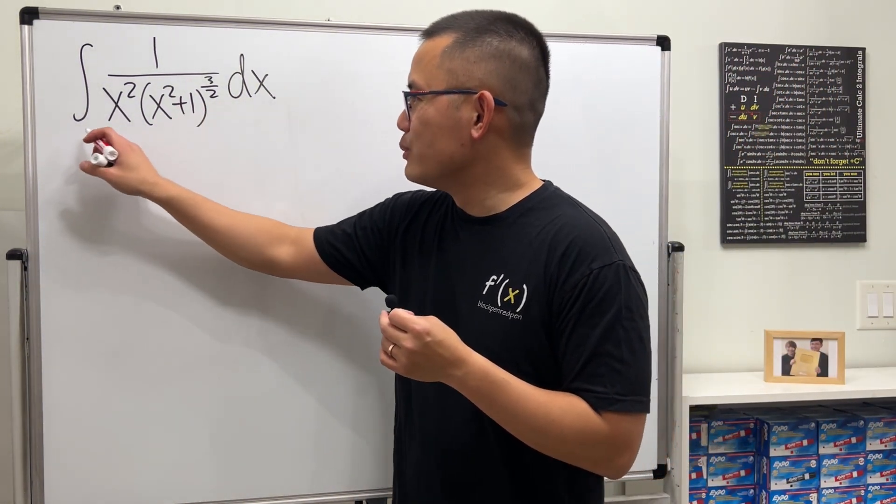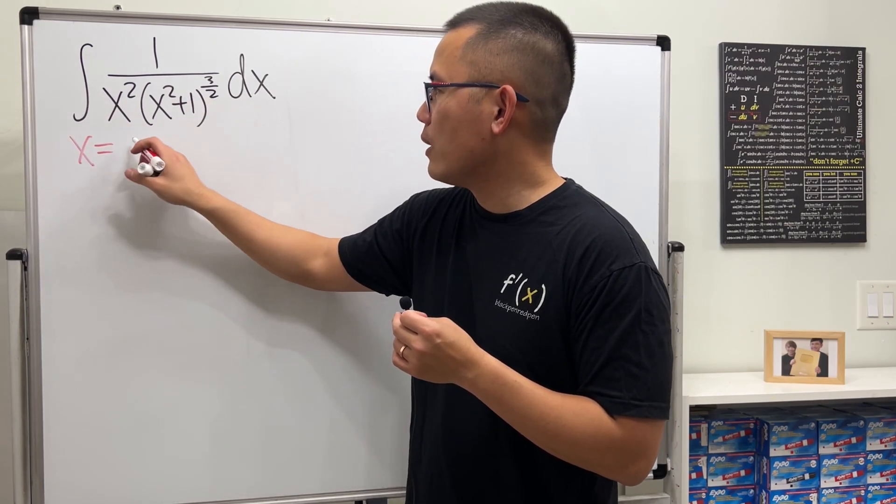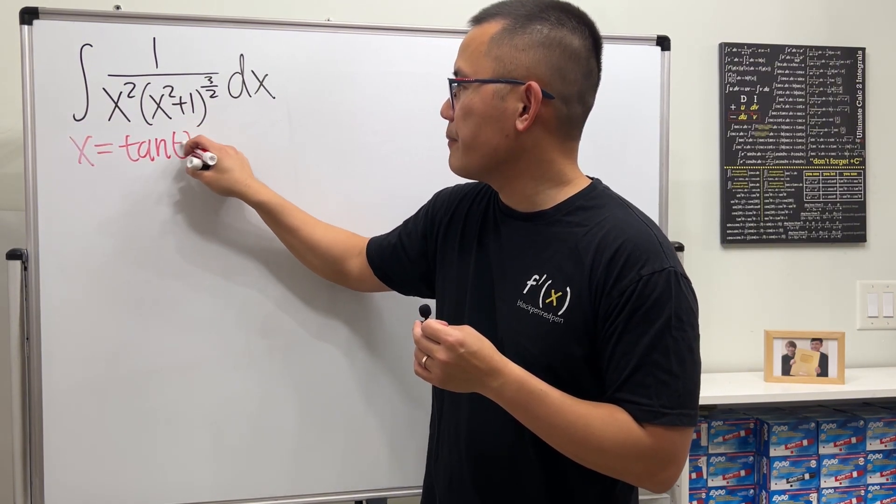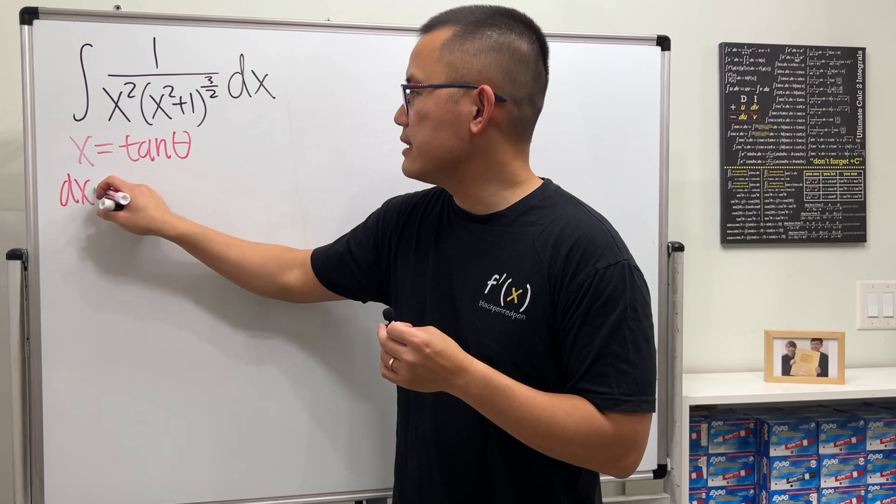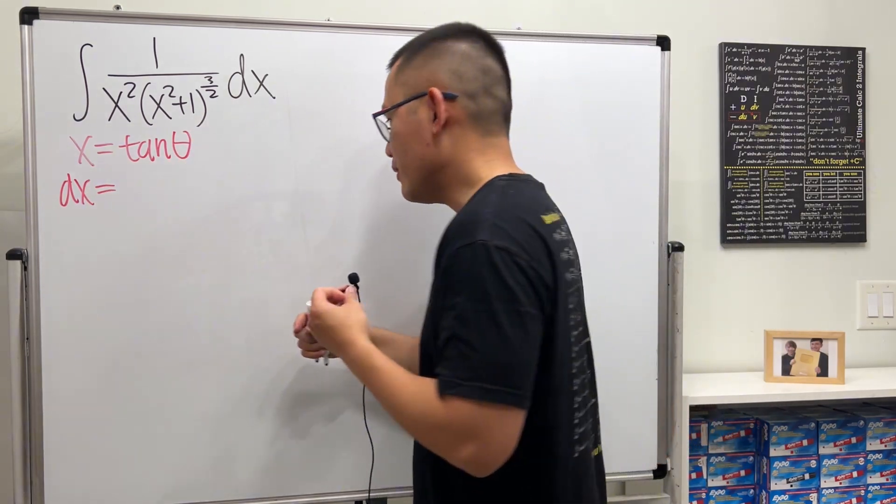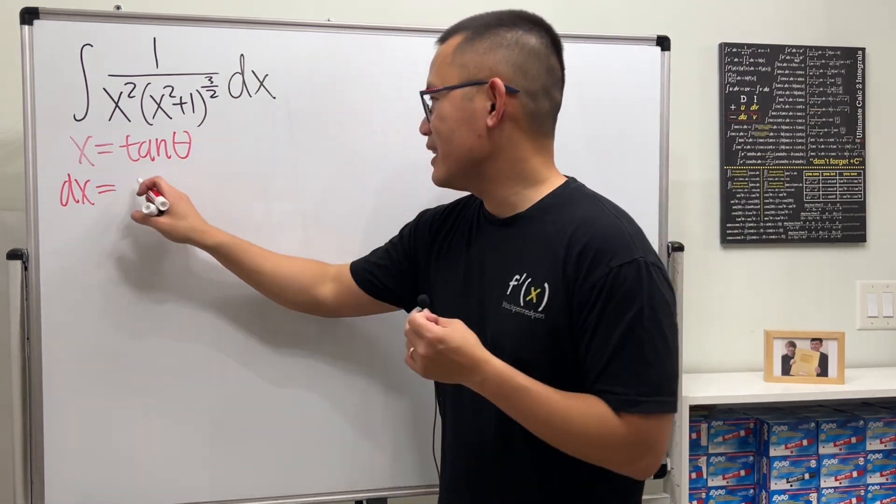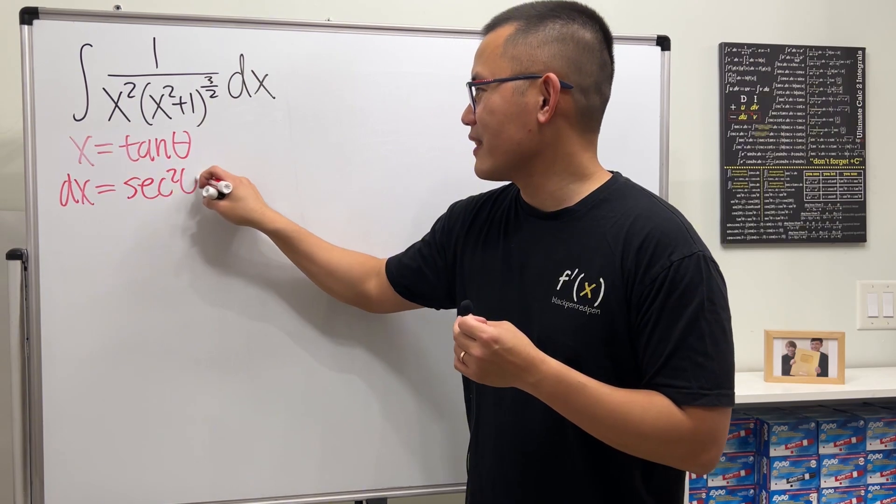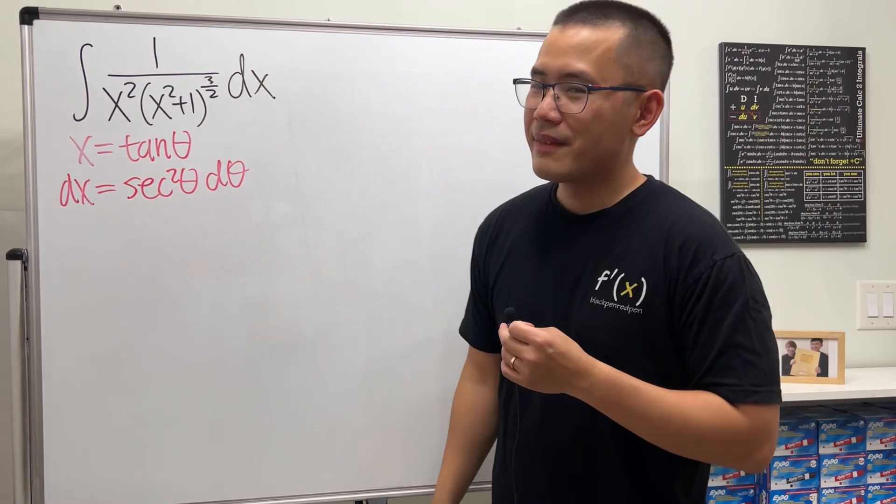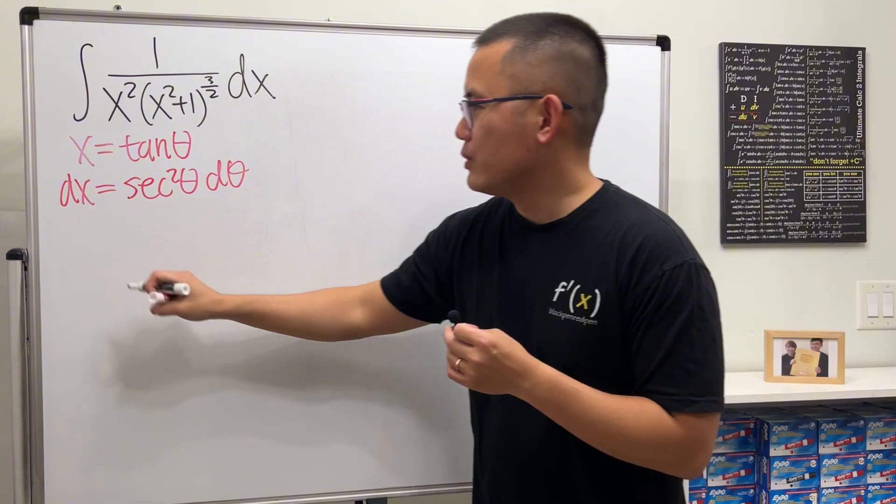The answer is tangent theta. So the first move is to set x equal to tangent theta, and then differentiate both sides. The derivative of tangent theta is secant squared theta d theta.